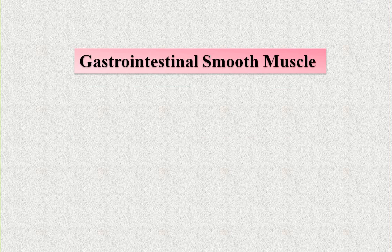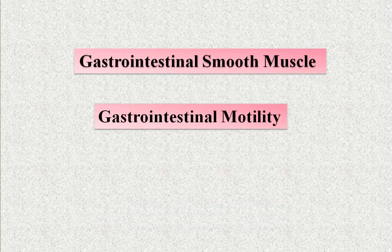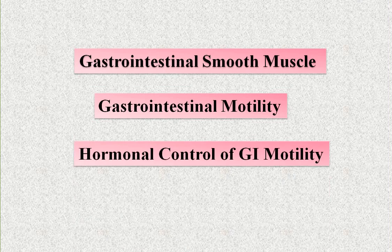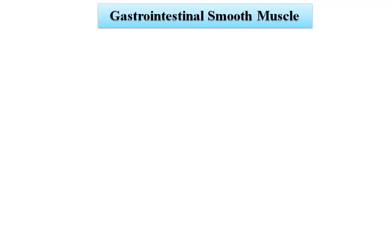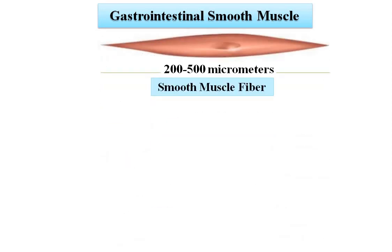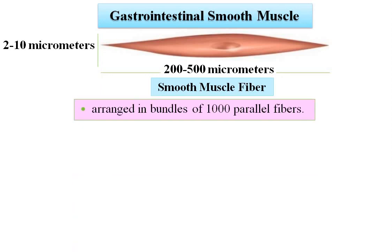In this segment, we will study gastrointestinal smooth muscle, gastrointestinal motility, and hormonal control of gastrointestinal motility. Starting with gastrointestinal smooth muscle: individual gastrointestinal smooth muscle is 200 to 500 micrometers in length and 2 to 10 micrometers in diameter. Smooth muscle fibers are arranged in the form of bundles, each bundle containing 1000 parallel fibers. In the gastrointestinal tract, there are two types of smooth muscles: the longitudinal muscle and the circular muscle.